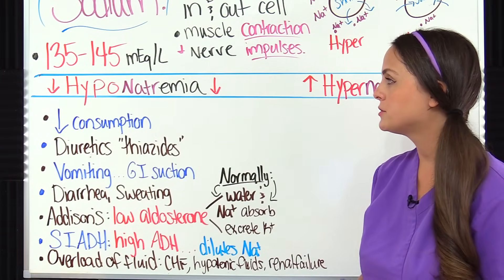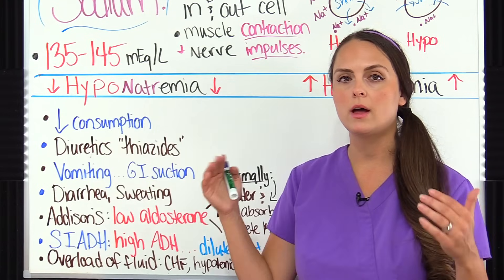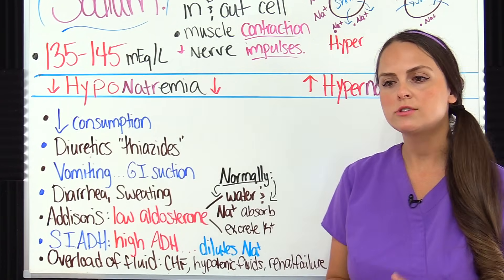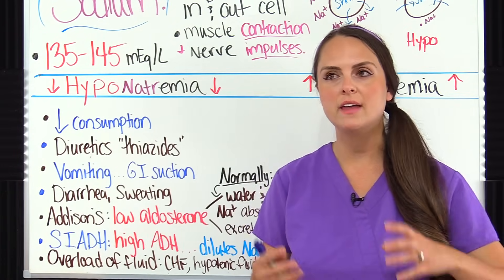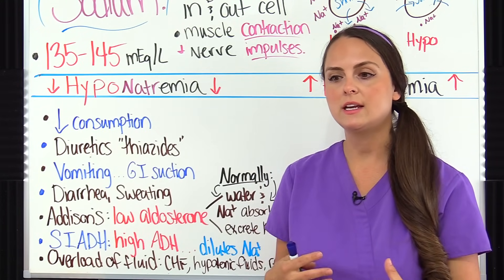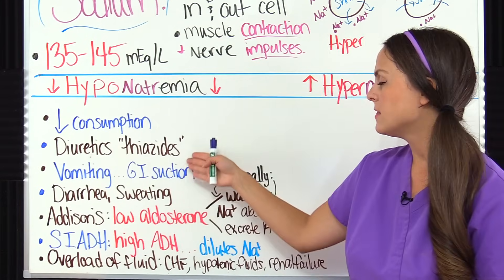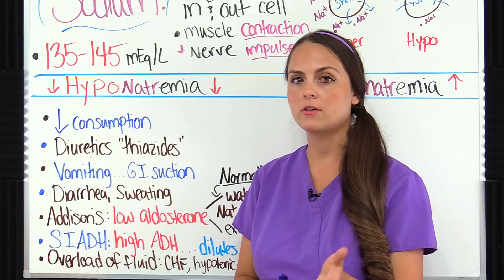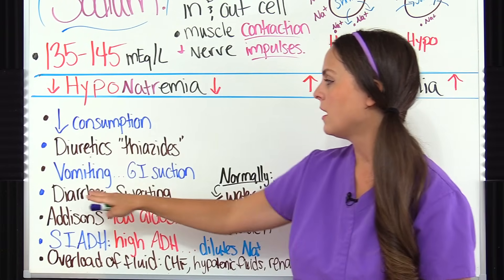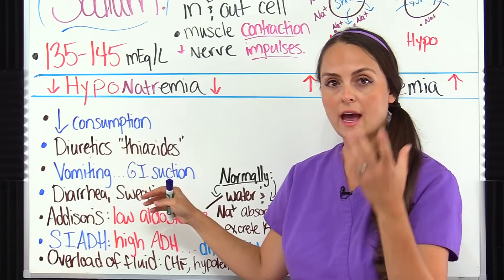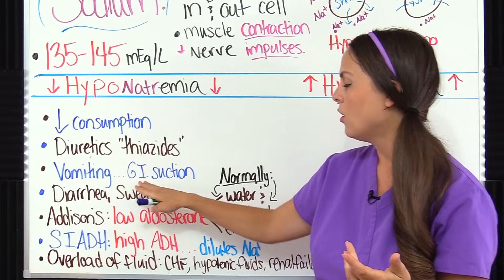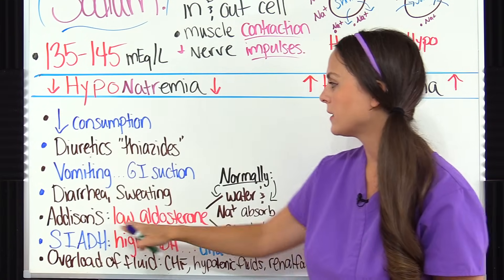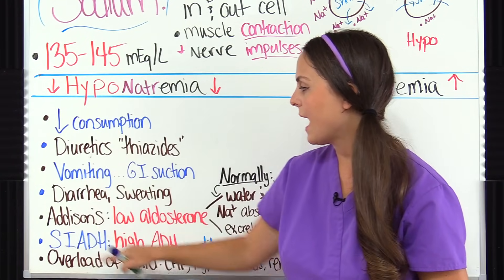Now let's talk about the main causes of hyponatremia — what can cause sodium levels in the blood to drop. Not consuming enough sodium can do that, along with giving a patient a thiazide diuretic. Thiazides influence the kidneys to waste sodium in the urine, dropping blood levels. Also, anything affecting the GI system — since gastric juices have a lot of sodium — can cause loss, such as vomiting, GI suction with an NG tube, diarrhea, and sweating, which contains a lot of sodium. Addison's disease can also cause this.